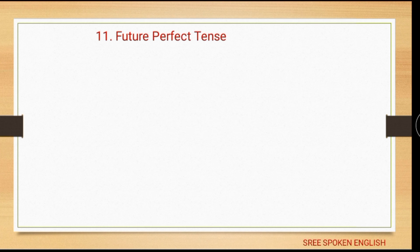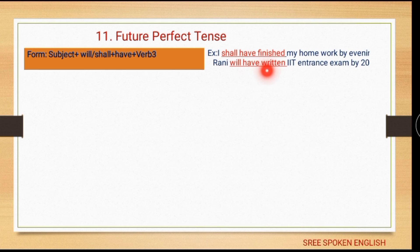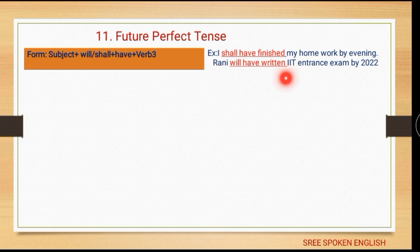The third subcategory: future perfect tense. The form is: subject + will/shall + have + verb third form. Example: 'I shall have finished my homework by this evening.' Another example: 'Rani will have written the IIT entrance exam by 2022.'